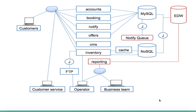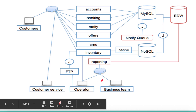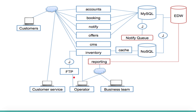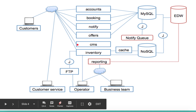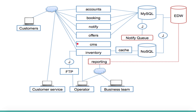Looking at the diagram, operators can send data directly into the database. One way is they send a feed file to FTPs — the FTP server parses it, takes the relevant inventory, and puts it into the MySQL database. The second option is that companies like Redbus publish APIs and operators can directly connect to those APIs and feed data into the inventory.